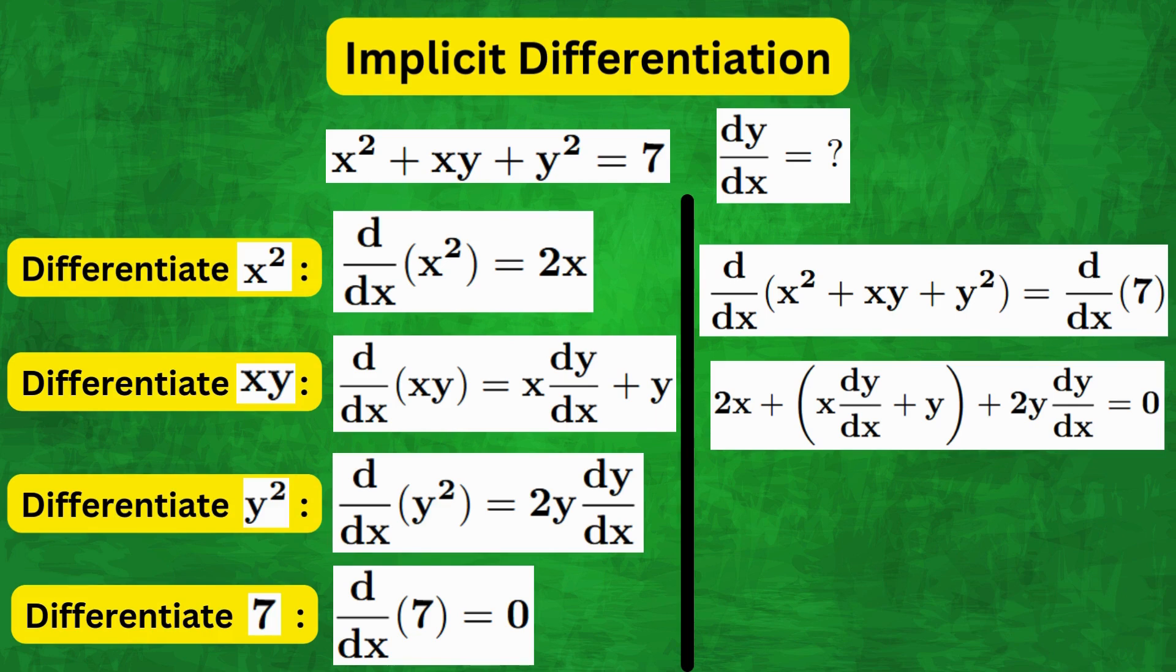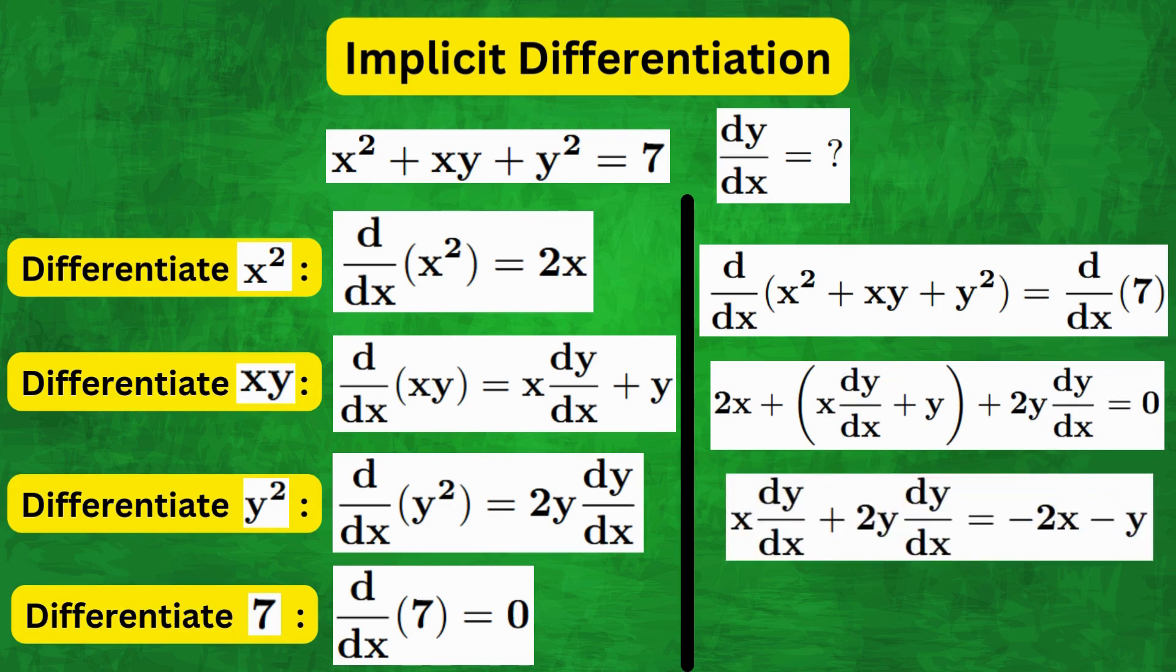Now the next step is to simplify and isolate the term dy by dx. So grouping all the dy by dx terms together, we get x dy by dx plus 2y dy by dx equals to minus 2x minus y.